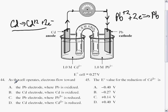So to answer question 44, the cell electrons flow towards the lead cathode. So B and D can be eliminated. Where Pb 2+, where Pb 2+ is reduced. So C is the correct answer, and A is eliminated.